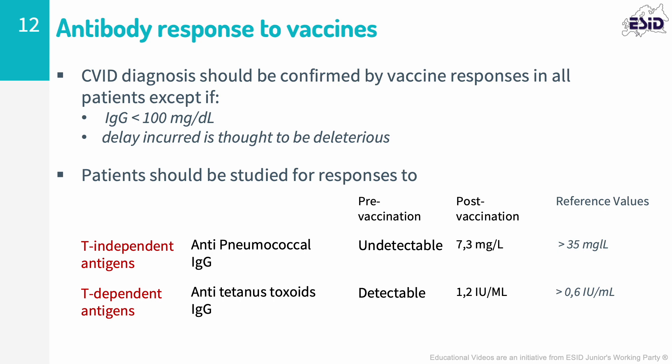In our patient, we first measured serum levels of specific IgG to anti-pneumococcal antibodies. In the initial measurement, specific IgG titers were low. Therefore, we immunized the patient and repeated the measurement after four weeks. Specific pneumococcal antibodies did not rise to protective titers post-immunization. This is consistent with a diagnosis of CVID.